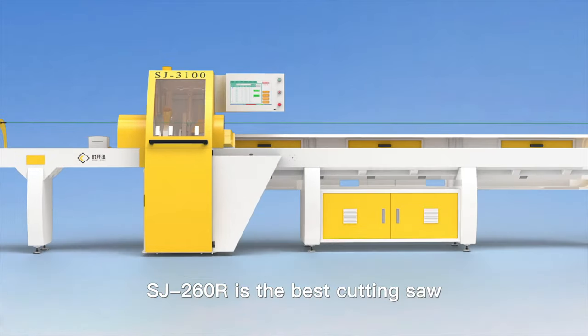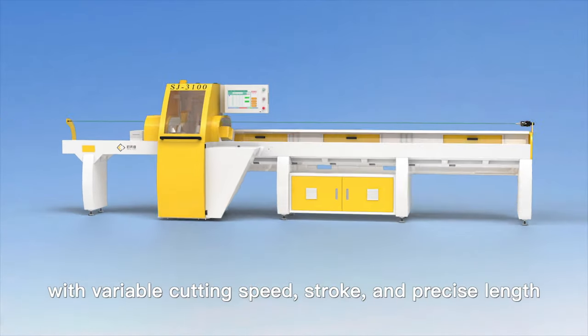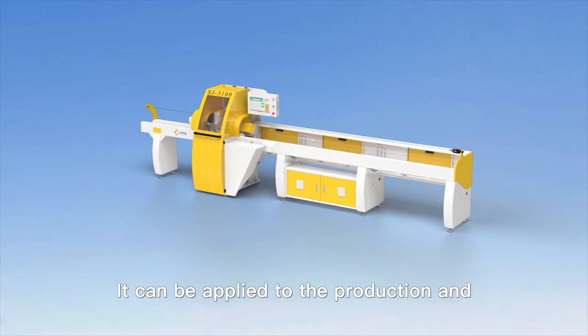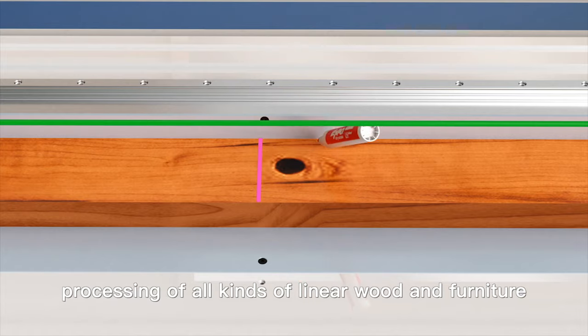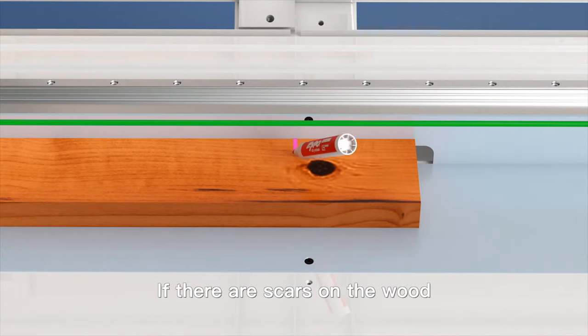Optimizing cross cut saw. SJ is the best cutting saw with variable cutting speed stroke and precise length. It can be applied to the production and processing of all kinds of wood in furnishing.